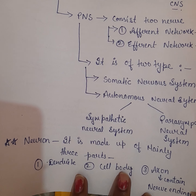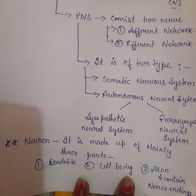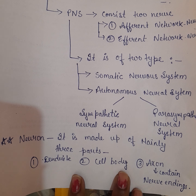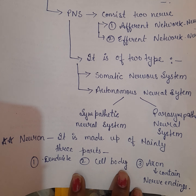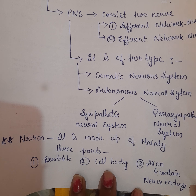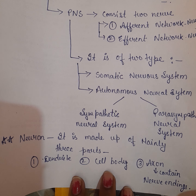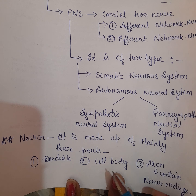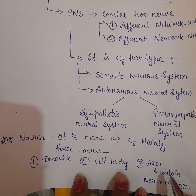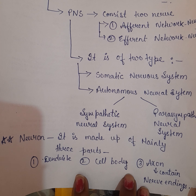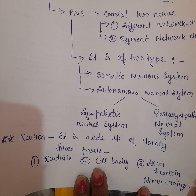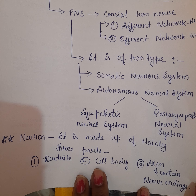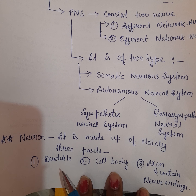Ab aata hai hamara main part of nervous system — that is neuron. Abhi filhaal yeh sirf ek intro hai. Neuron mainly teen parts se bana hota hai: dendrite, cell body, aur axon. Axon mein nerve endings bhi hoti hain jo signaling ke dauran bahut important role play karti hain.